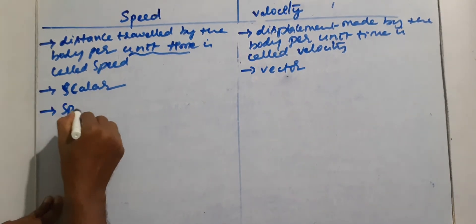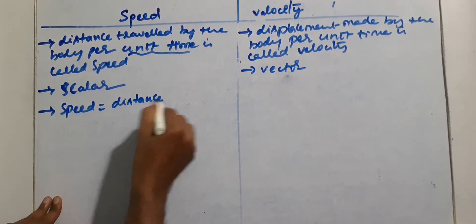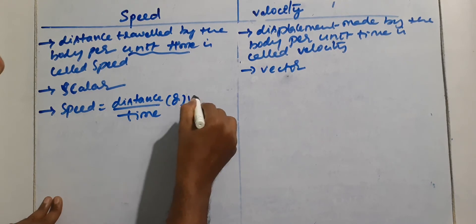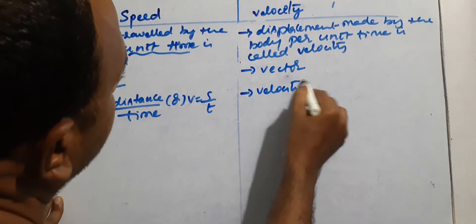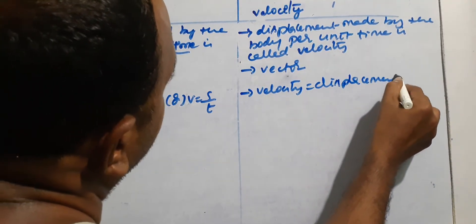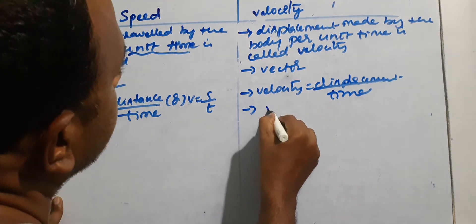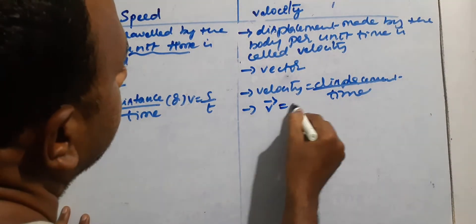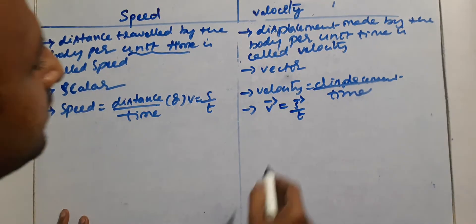Speed is given by the formula distance by time, or it can be written as V equals S by T. Velocity is given by the formula displacement by time. Since velocity is a vector it can be denoted by V-bar, displacement is a vector denoted by S-bar, and time is a scalar — so velocity equals S-bar by T.